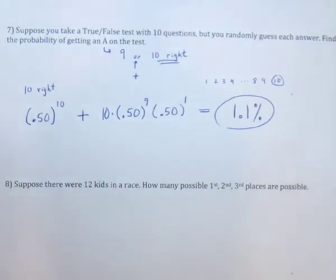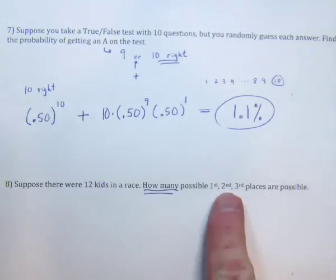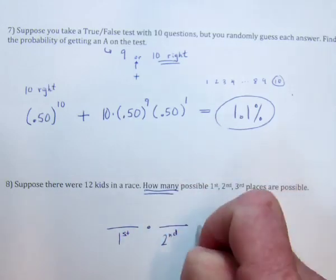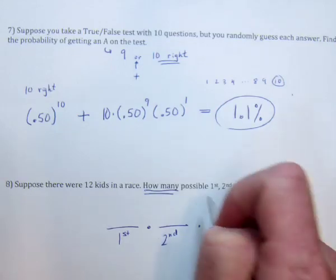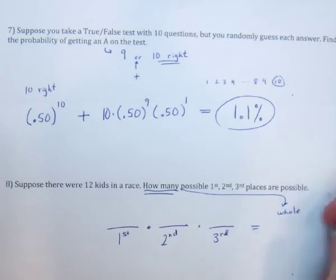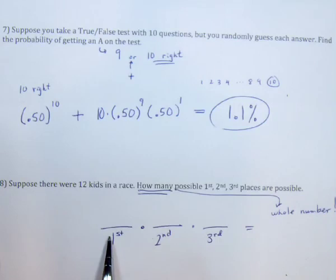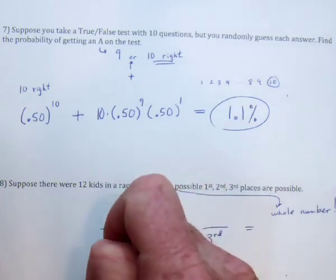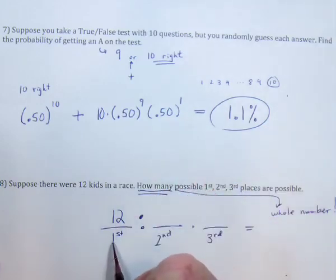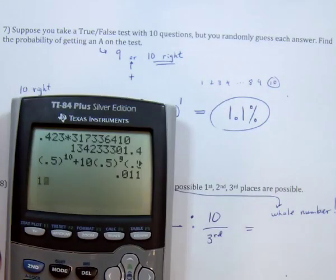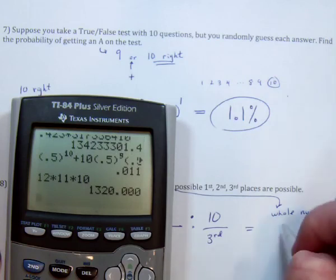Next: suppose there are 12 kids in a race. The key word is 'how many' — so again, this is counting. The order does matter because there's an implied order: there is a first, a second, and a third. So we say: here's first place, and (which means multiply), here's second place, and here's third place. For first place, there are 12 kids — any of them could win, so 12 possibilities. Then 11 kids are left, then 10 kids. Multiply: 12 times 11 times 10 equals 1,320.